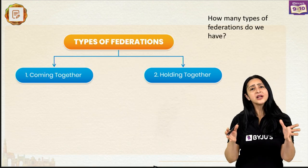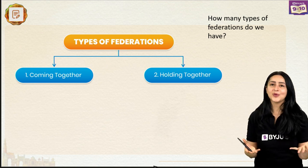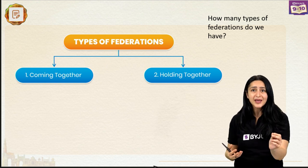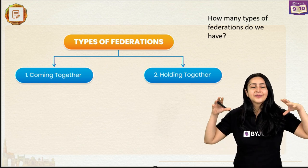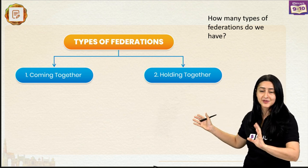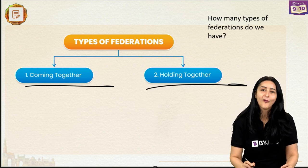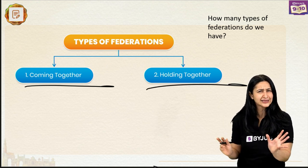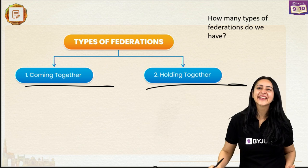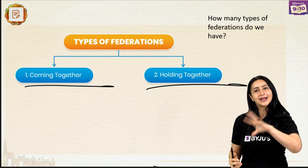Can you tell me how many types of Federations do we have? Let me know in the comment section below. Basically, a Federation, depending on the historical context in which it was formed, could be of two major types: number one, a coming together Federation, or number two, a holding together Federation. These terms might seem overwhelming but I am here to make them easy for you. Let's look at these two divisions individually.